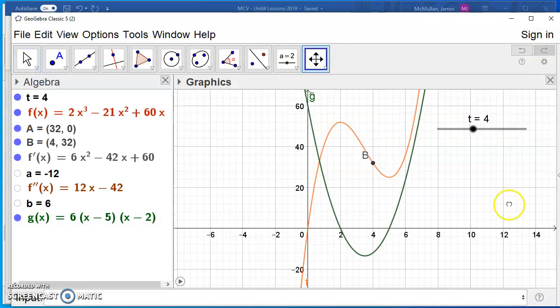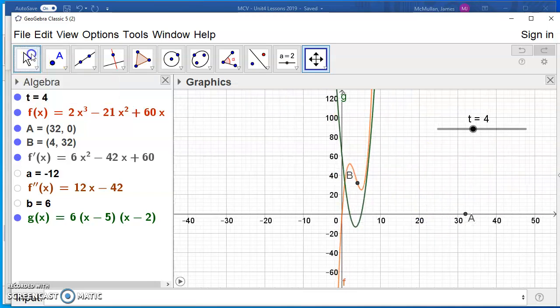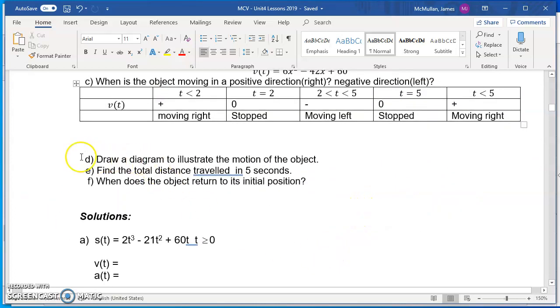Therefore, the object is stationary at t equals 2 and t equals 5. Those are the two times when the object is stopped, and they're turning points on the graph. When is the object moving in a positive direction or a negative direction? To do this, what you want to do is you want to create a table that analyzes your derivative.